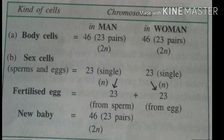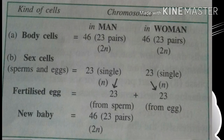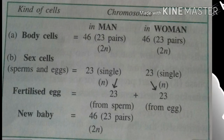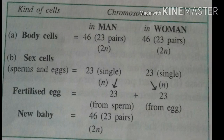When fertilization occurs between sperm and egg, then 23 plus 23 gives 46, that is 23 pairs of chromosomes, that is 2N. So the new baby, embryo, and fetus have 23 pairs of chromosomes again.